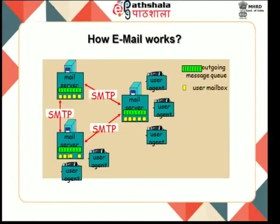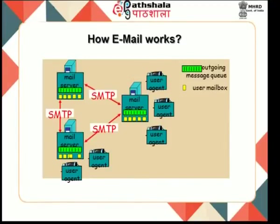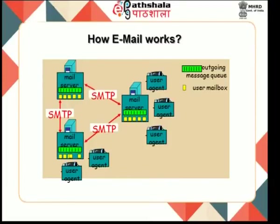This figure gives an idea of how email works. We can see that there are mail servers and the SMTP protocol works between them. Every client computer needs a user agent. Within the mail server, each user has a mailbox (shown as yellow boxes) and a green outgoing message queue. Any mail that comes to a user is stored in their mailbox, and when the user agent comes online it can download or receive the available messages.